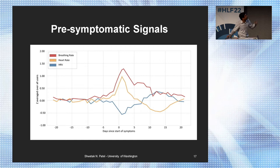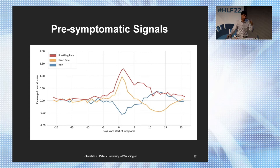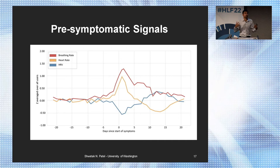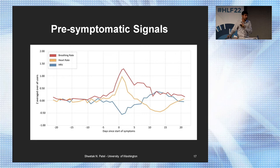At day zero, heart rate variability goes down because the body is fighting infection, while heart rate and respiration rates go up. But crucially, looking at day minus five, minus three, minus two — before somebody is symptomatic — you're already seeing the immune response in the body. Up to four days before symptoms, we actually knew somebody had COVID. People are most infectious before they're symptomatic, so from a public health perspective this means you can quarantine people sooner and intervene with therapeutics when viral load is still lower.